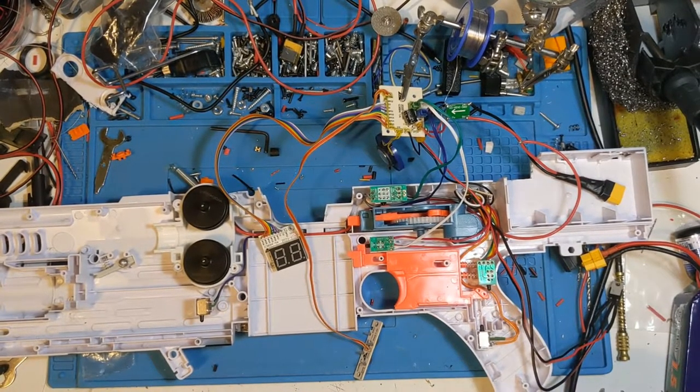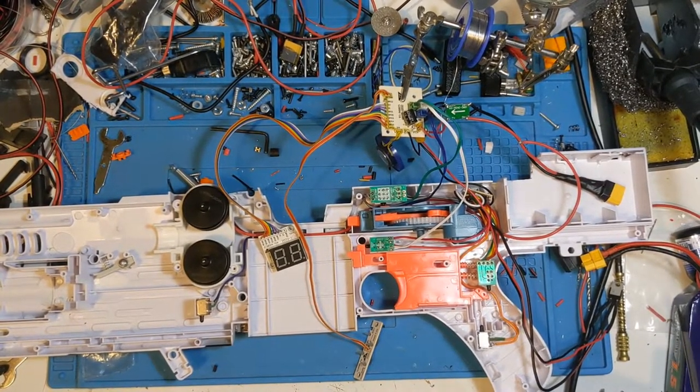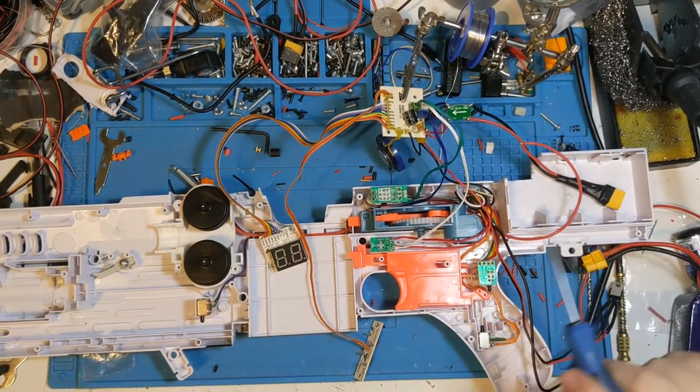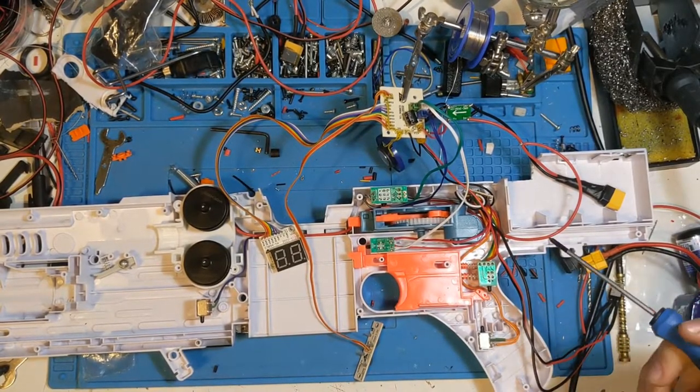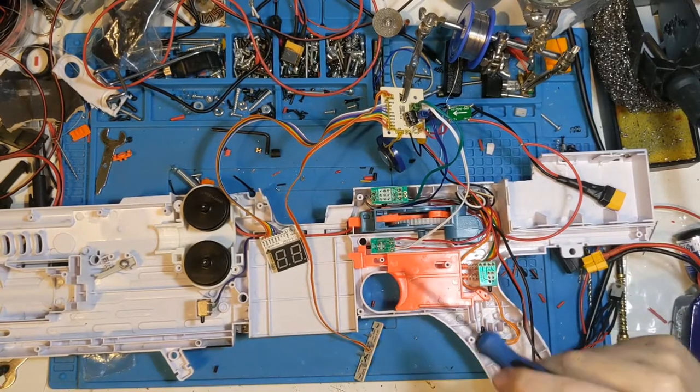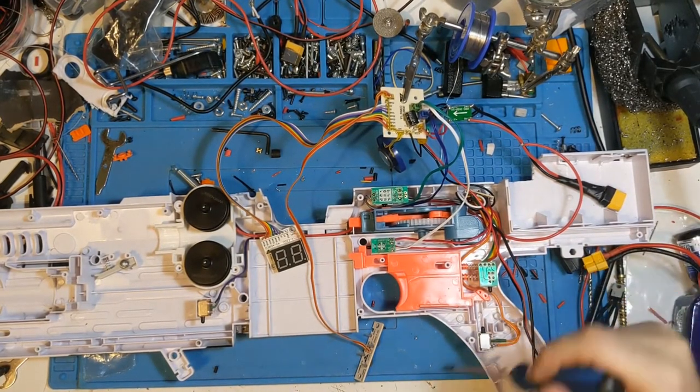Here we go. The Nerf Pulse Rifle takes four C-cell batteries, so it normally outputs six volts. That powers the motors and the board, and because this has all the sound effects and the ammo counter and everything else...